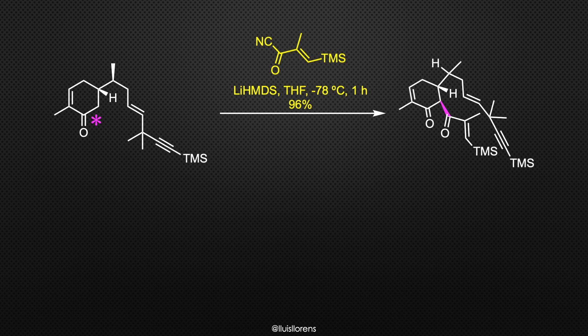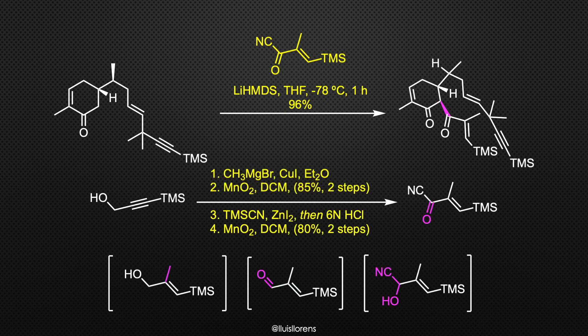Acylation of the ketone with acryloylcyanide gave the desired product in 96% yield. The acryloylcyanide was synthesized in four steps from a commercial alcohol that was treated with an excess of methylmagnesium bromide followed by oxidation with manganese dioxide. The aldehyde was treated with TMS cyanide followed by oxidation of the corresponding allylic alcohol.